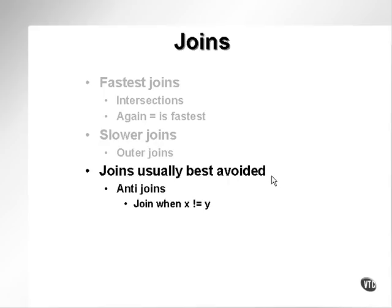Remember that the fastest way to find data is to find exact hits — to find things with equality, an equal sign, finding a single row. The fewer rows you're finding in the table, the less likely you're going to need to full scan that table, and the faster your queries will be.